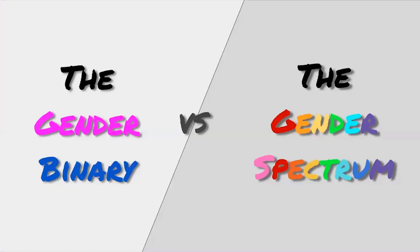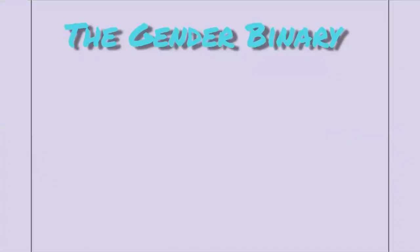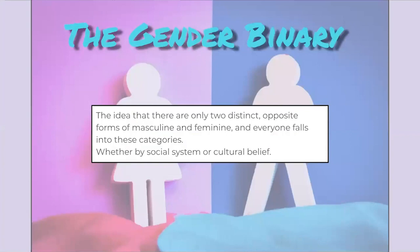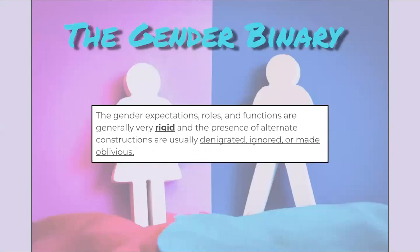There are two different concepts about what gender could be: the gender binary and the gender spectrum. The gender binary is the classification that there are only two distinct, opposite forms — masculine and feminine — and everyone falls into one of these two categories by social system or cultural belief. These expectations are very rigid, and alternative constructs are usually denigrated and made invisible. Since we've already talked about how there are more than two sexes, there are definitely more than two genders as well — binary thinking leaves no room for intersex or trans people to exist.